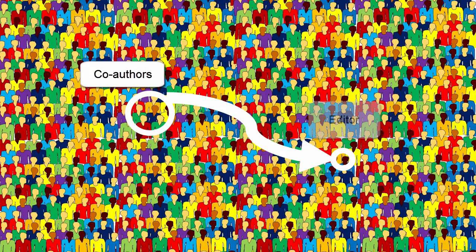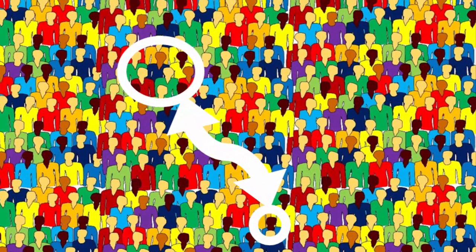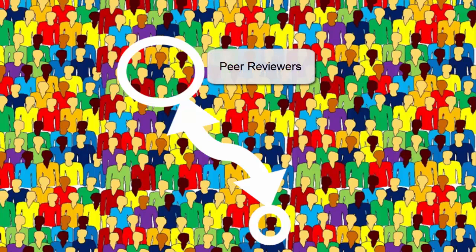wrote an article about some of their research and submitted it to the editor of the Journal of Applied Geophysics, who is also a geologist. The editor sent the article to three or four other geologists for their critique and recommendation on whether to publish the article. This is the peer review part of the process.